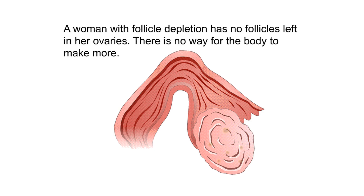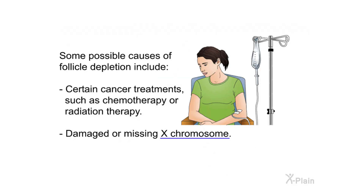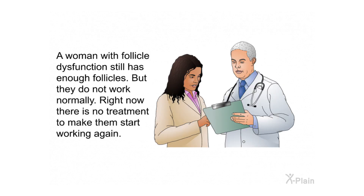A woman with follicle depletion has no follicles left in her ovaries, and there is no way for the body to make more. Possible causes include certain cancer treatments such as chemotherapy or radiation therapy, or a damaged or missing X chromosome. A woman with follicle dysfunction still has enough follicles, but they do not work normally, and currently there is no treatment to make them start working again.